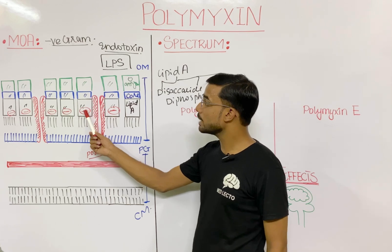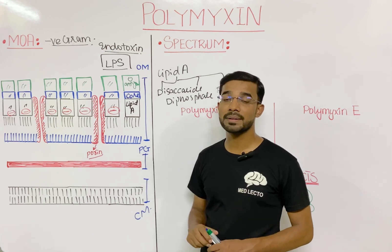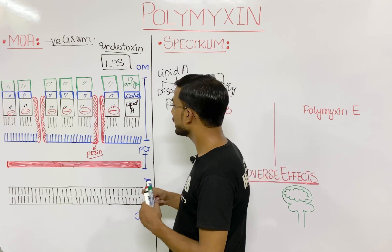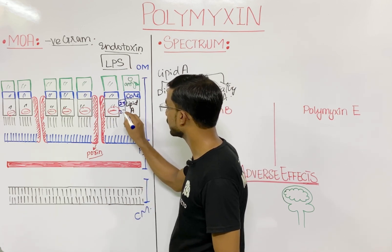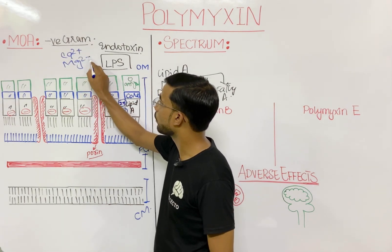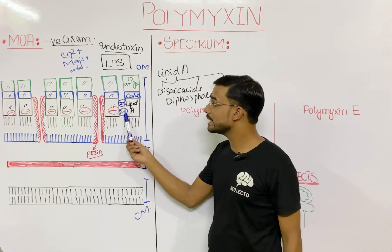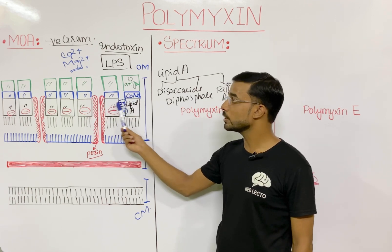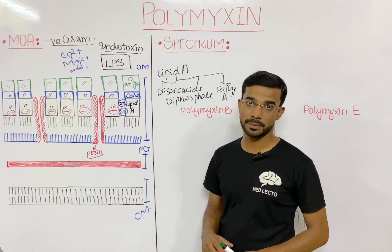For the combinations of the lipid A components, there are different cations present in between them. These are divalent ions like calcium Ca2+ and magnesium Mg2+. In between the two lipid A molecules, you will see the presence of these divalent cations like calcium and magnesium.